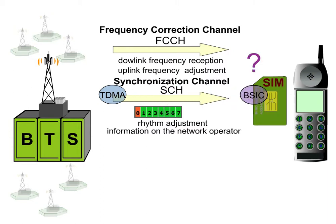After this step, the mobile is able to decide whether it has chosen the proper network. If not, it starts the same procedure again, trying with the second strongest FCCH received.